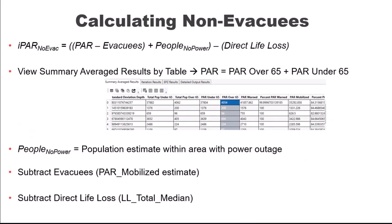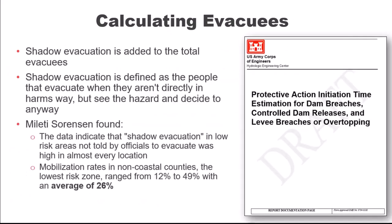Total population is based on the structure dataset — the NSI has distributed population in each structure, giving us total day and night population within the study area. Population at risk is defined by the inundation extent for any given flood: anyone who starts within that flood extent is counted in the PAR for both day and night. Exposed is all those who are still there when the flood arrives.